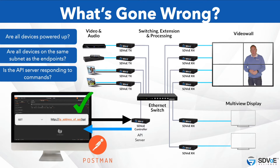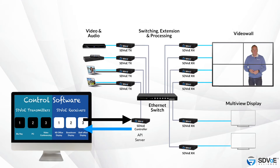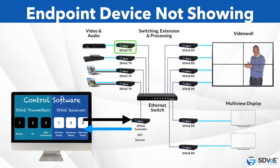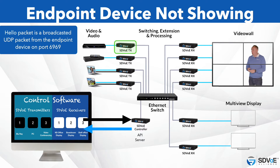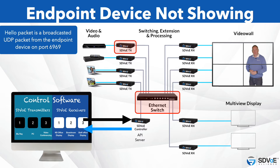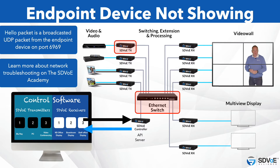Tools such as Wireshark can also be used to monitor the throughput of data packets between the client software, the API server, and the endpoint devices. When an endpoint device connects and comes online it sends a tiny packet of data called a hello packet to the API server every two seconds. Using Wireshark we would see this as a broadcast UDP packet from the endpoint device on port 6969. If the endpoint device drops away from the client software and there is no sign of the hello packet in Wireshark, then the device is no longer communicating with the API server. This problem may be down to a wider network issue, and you can learn more about network troubleshooting on the SDVoE Academy.